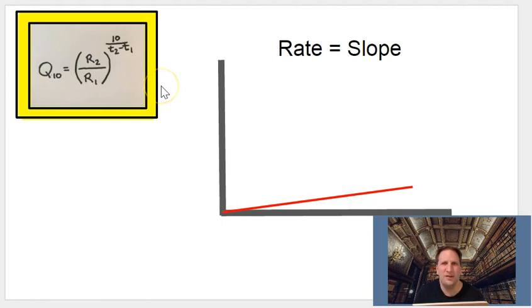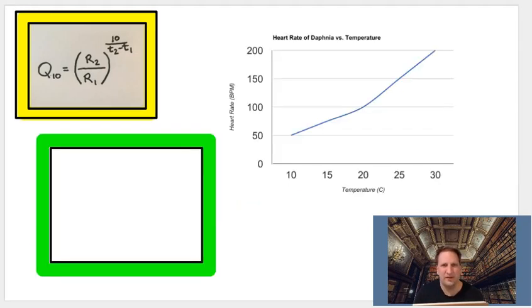So if you are given two points and you have to plug these into this equation, it's not so bad. Here would be a graph, and say they only gave you the points for 10 degrees and 30 degrees. This is the heart rate, or beats per minute, of the Daphnia, which is the water flea. On the Y-axis are the beats per minute. On the X-axis is temperature in degrees Celsius.